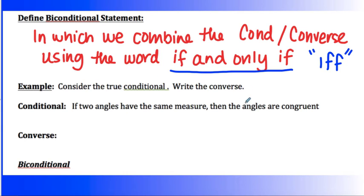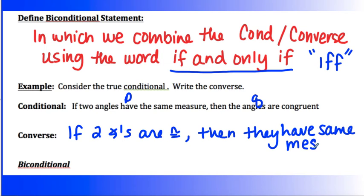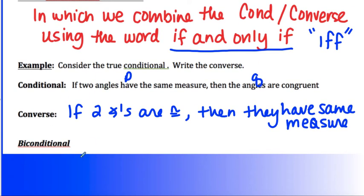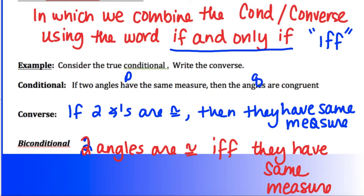Consider this true conditional: 'If two angles have the same measure, then the angles are congruent.' Writing the converse — flipping p and q — gives us: 'If two angles are congruent, then they have the same measure.' Both are true, so I can write the bi-conditional: 'Two angles are congruent if and only if they have the same measure.' This is actually the definition of congruent angles — congruent angles have the same measure.